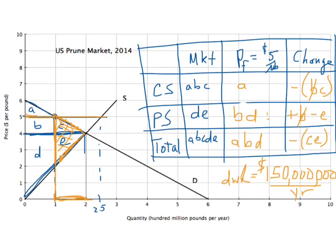Notice that farmers gain area B and lose area E — and here it looks like it might be a tie, somewhat ambiguous. In the real world, the demand for agricultural commodities tends to be very inelastic — a very steep demand curve. In that case, area E turns out to be pretty small and area B turns out to be pretty large. Go ahead and do that as an exercise: work through a price floor example with a very steep demand curve relative to the supply curve, and verify that rectangle B is bigger in area than triangle E.